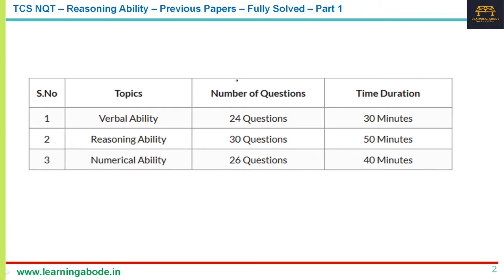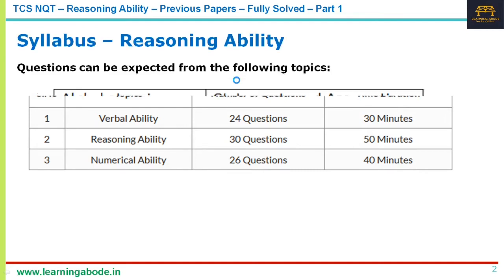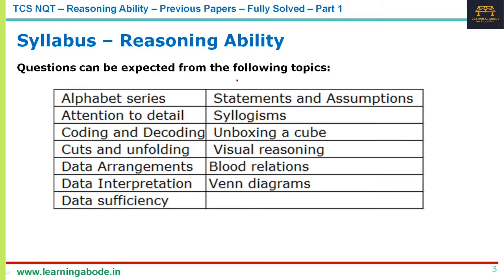In this video, I'll be solving about 11 reasoning ability questions covering all different types. In total you will have 30 questions, and there are no negative marks as far as TCS NQT is concerned. You can expect reasoning ability questions from these topics — pause the video to look at the details. Now we'll move on to the questions.